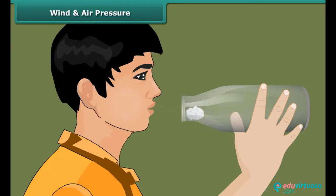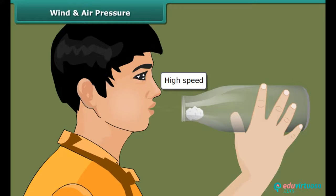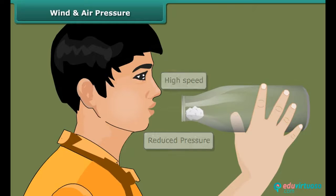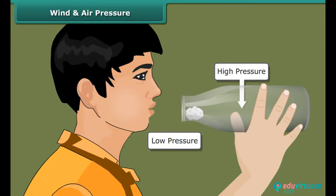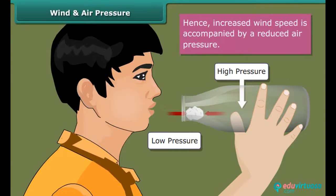When we blow into the mouth of the bottle, the air near the mouth has higher speed, which decreases the pressure there. The air pressure inside the bottle is higher than near the mouth. So when we blow, the air inside the bottle pushes the ball out. We conclude that increased wind speed is accompanied by reduced air pressure.